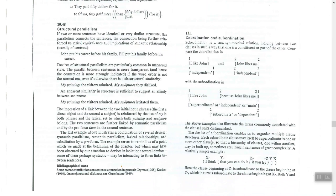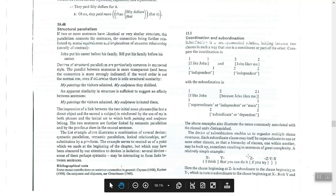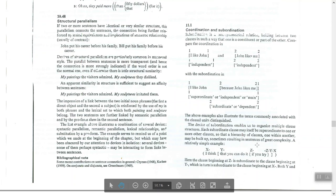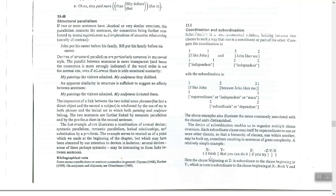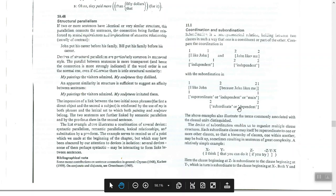The examples also illustrate terms commonly associated with clause units. The device of subordination enables us to organize multiple clauses and multiple sentence structures. A subordinate clause may itself be superordinate to one or more other clauses, resulting in a hierarchy of clauses — one within another. For example: 'I think that you can do it if you try' — as one sentence.